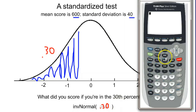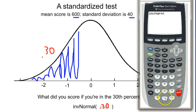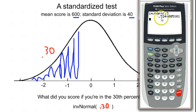It's going to be right next to the other normal function — second, distr, and inverse norm is right there. We type in our area of 0.30 and we get negative 0.524.